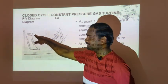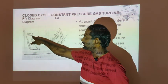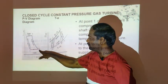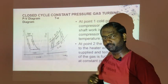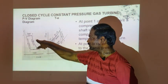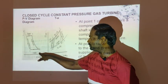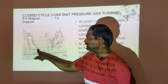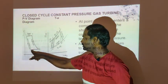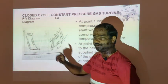Next, we expand through the turbine in process 3-4, where pressure drops from P3 to P4 and temperature also drops. Then in the cooler, the volume returns from V4 back to V1, completing the P-V diagram cycle.